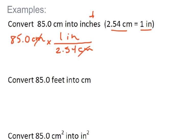Now we multiply the top numbers, 85.0 times 1 divided by 2.54, and we get an answer. I get an answer of 33.4645. The units that I have left here are inches, so that's my answer.